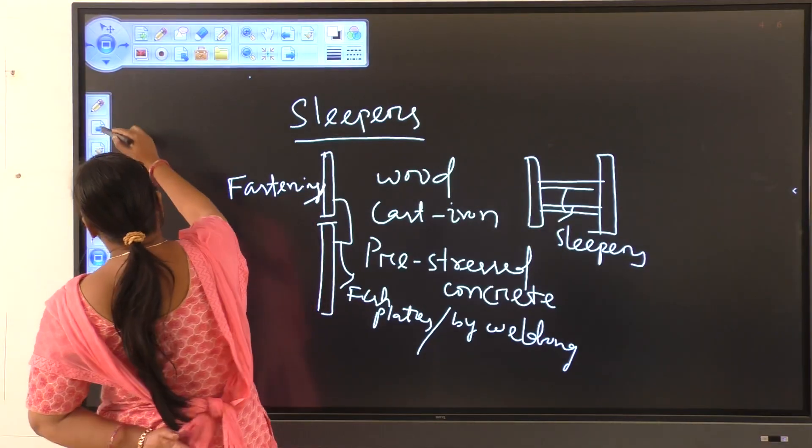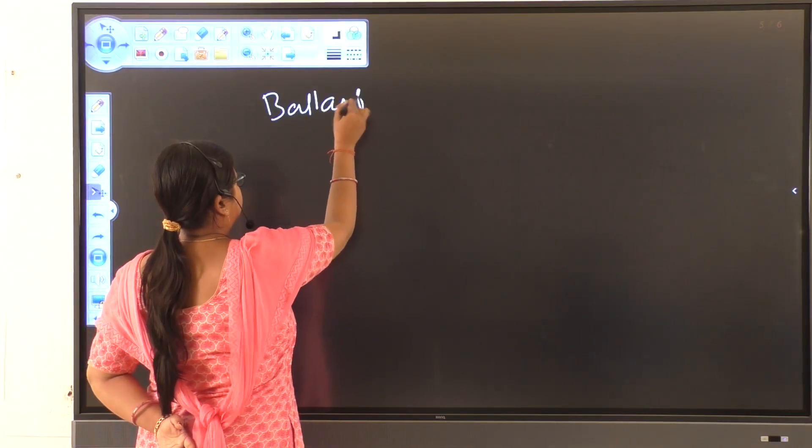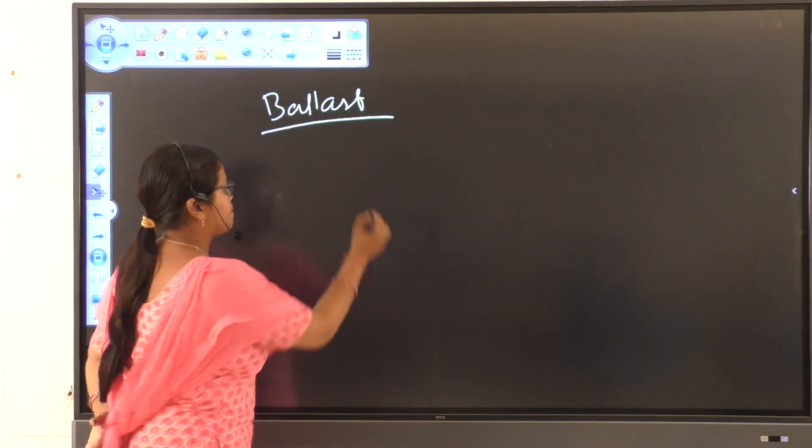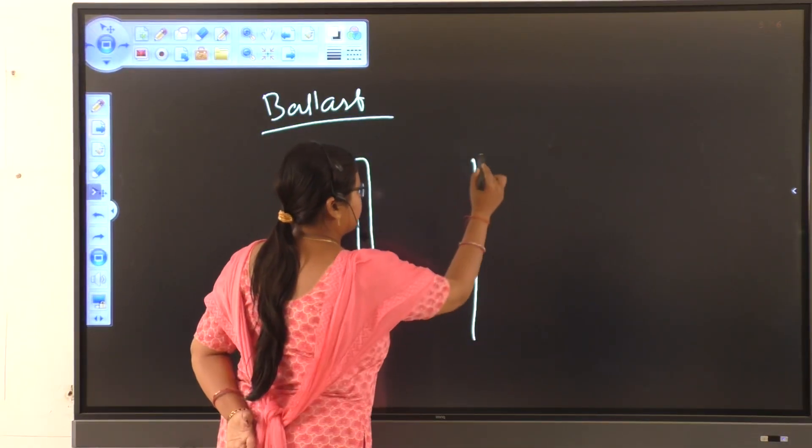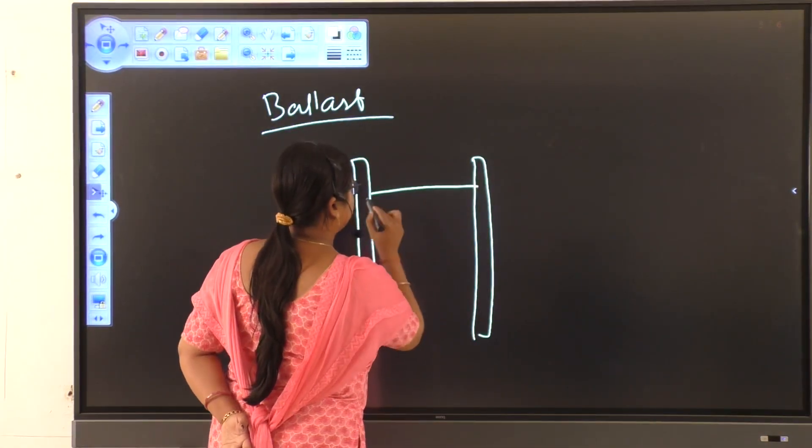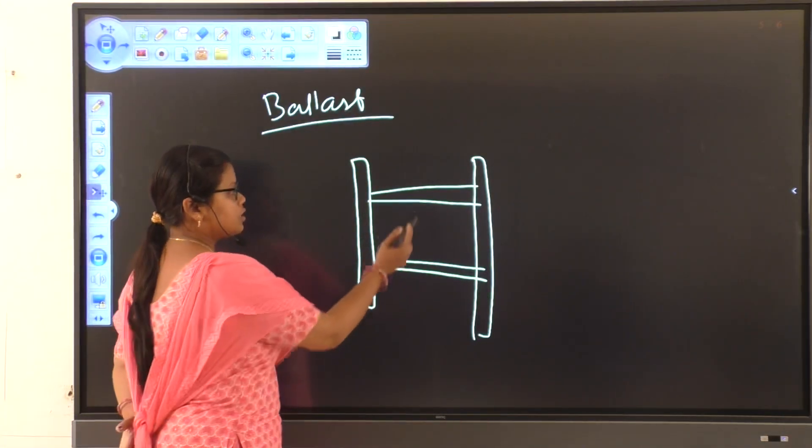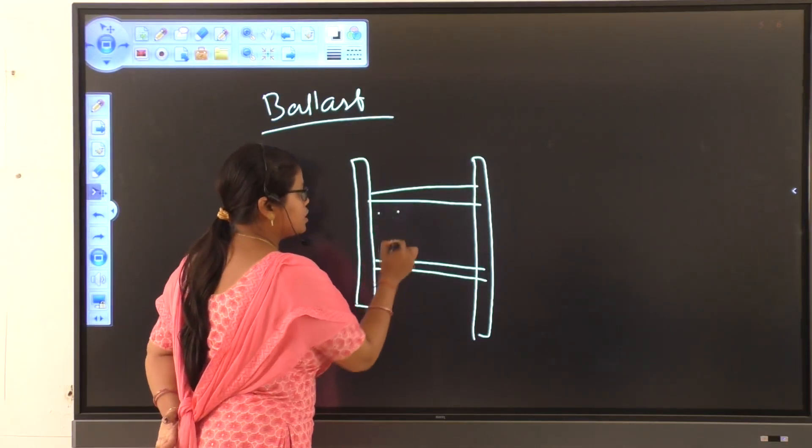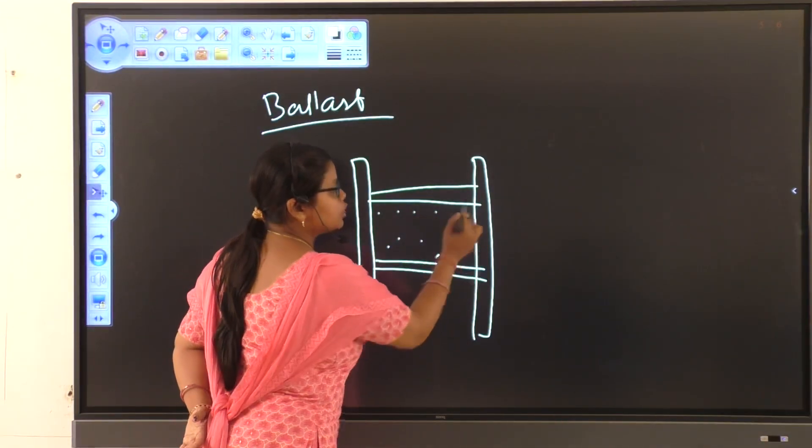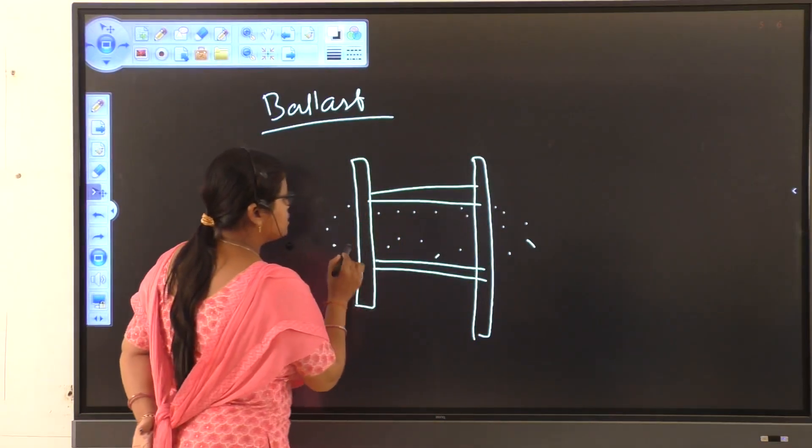Next, ballast. Ballast is a material which is placed between the two sleeper or on the top of the formation.